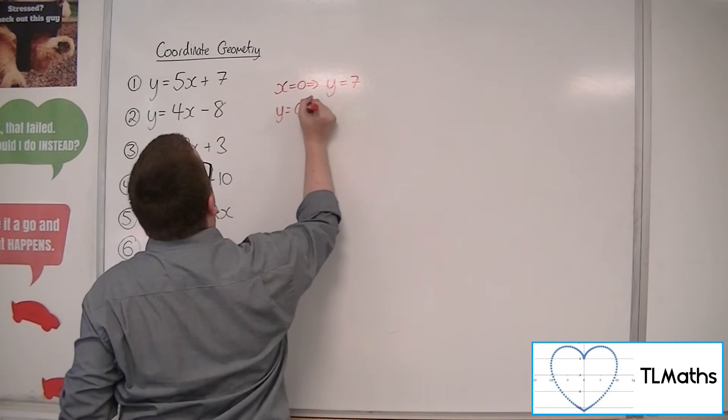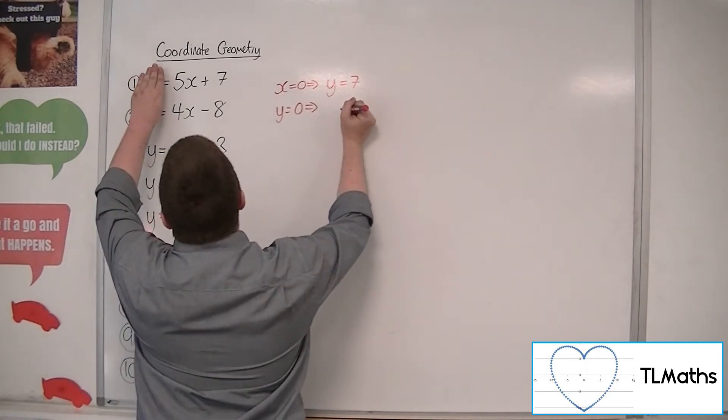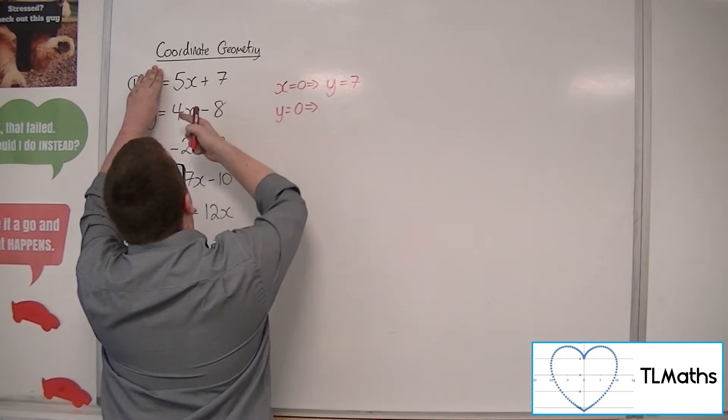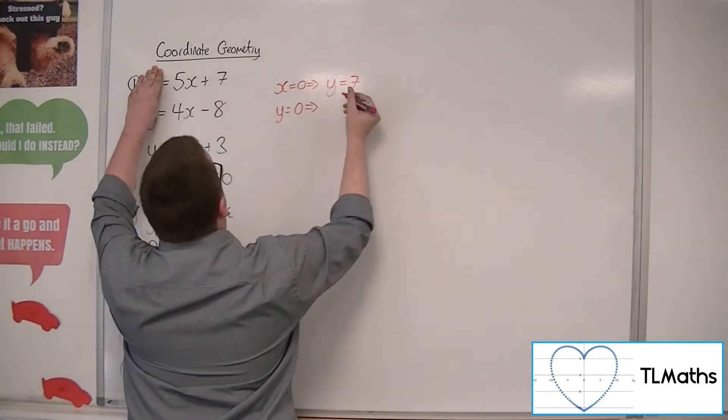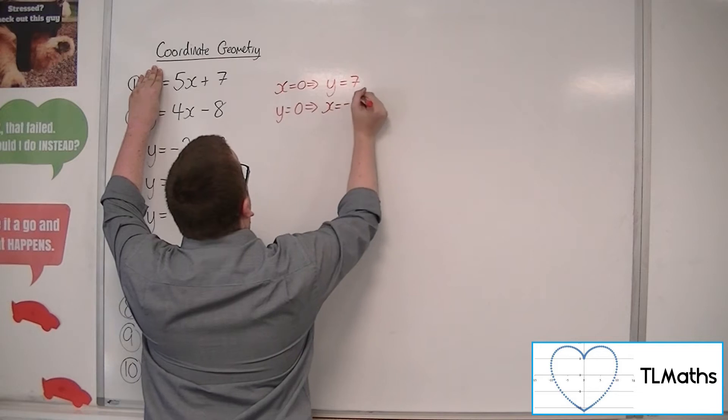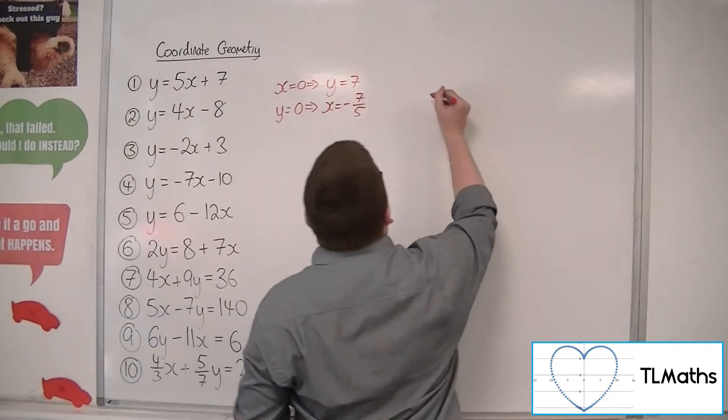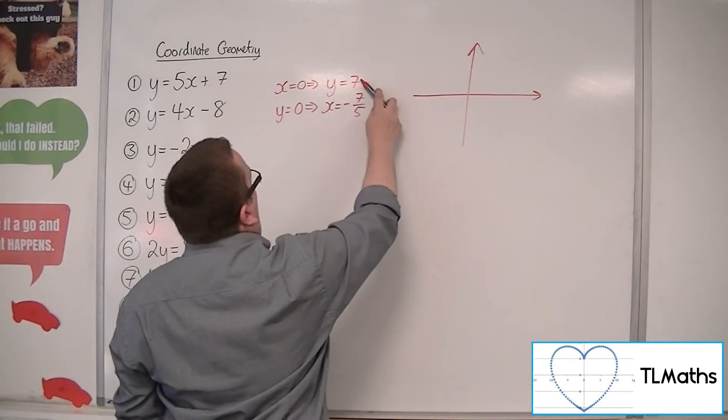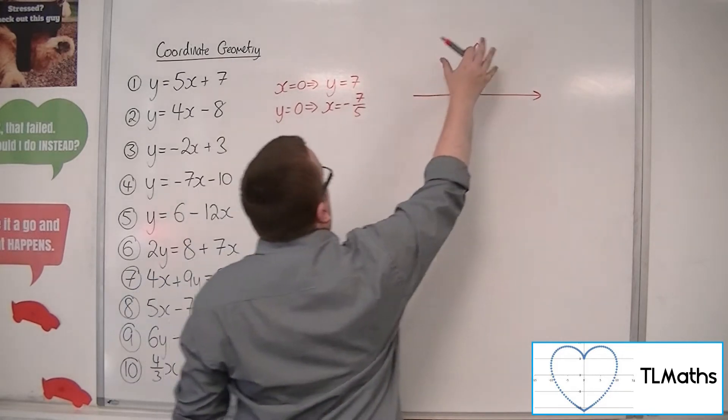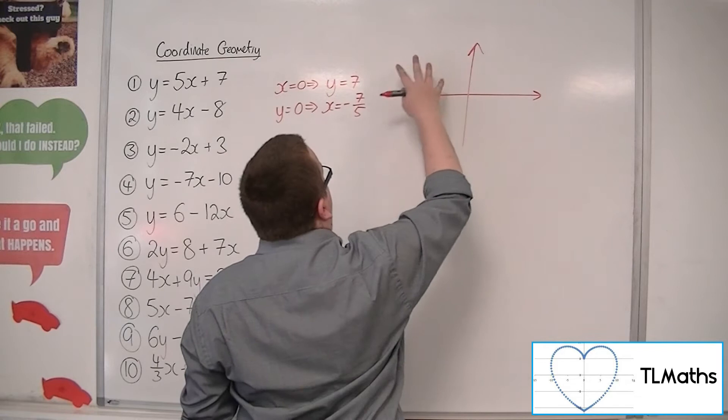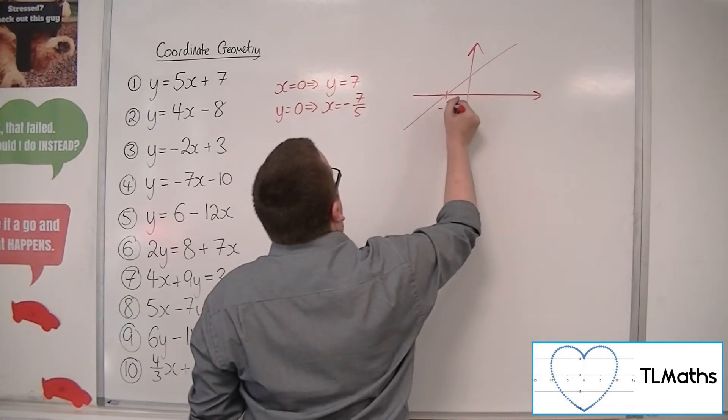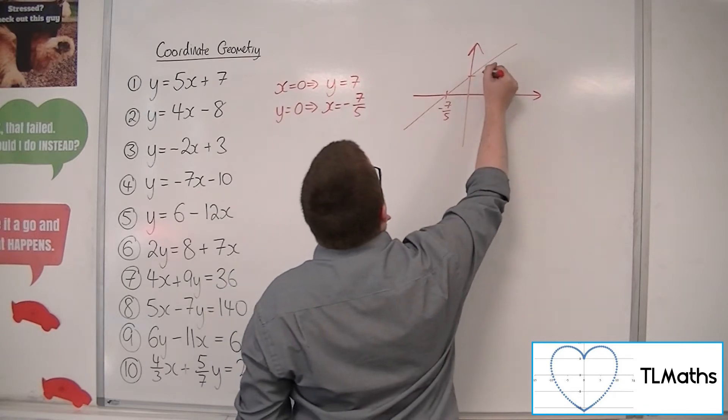And when y is 0, then you'd take the 7 to the other side, so minus 7, divide through by 5, so minus 7 fifths. So x is minus 7 fifths. So that tells you that the line is crossing the y-axis in the positive and the x-axis in the negative. So it's going through something like that. There's the x minus 7 fifths, and there's the y at 7.